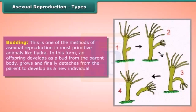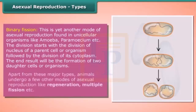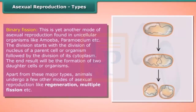Asexual reproduction has several types. Budding is one method, found in primitive animals like hydra. An offspring develops as a bud from the parent body, grows, and finally detaches to develop as a new individual. Binary fission is another mode, found in unicellular organisms like amoeba and paramecium. Division starts with the nucleus, followed by division of the cytoplasm, resulting in two daughter cells. Other modes include regeneration and multiple fission.